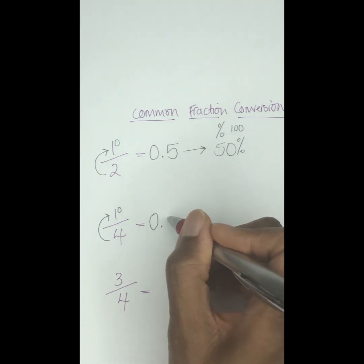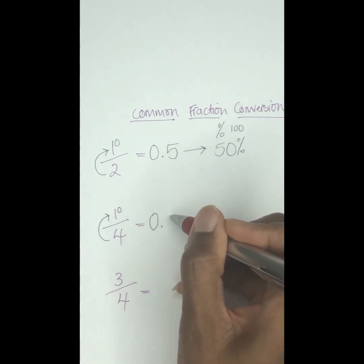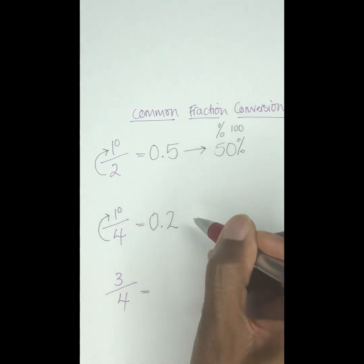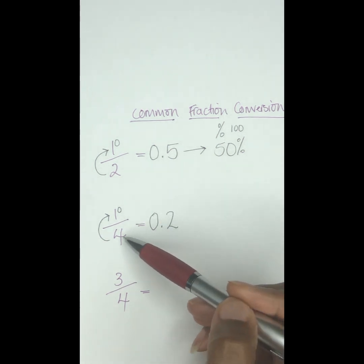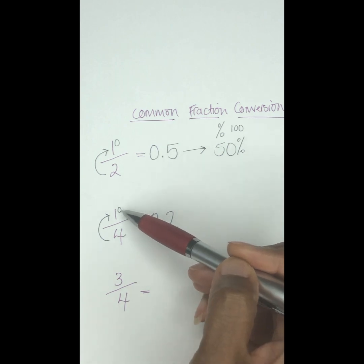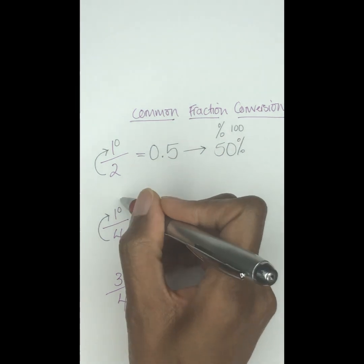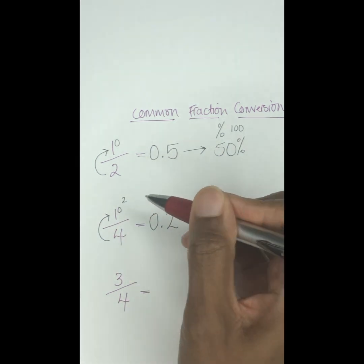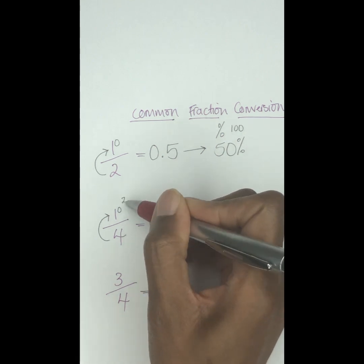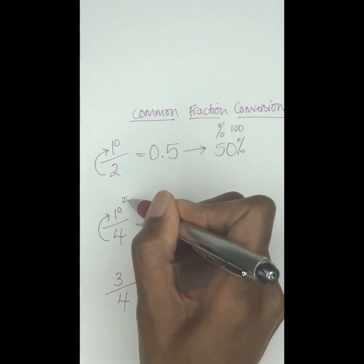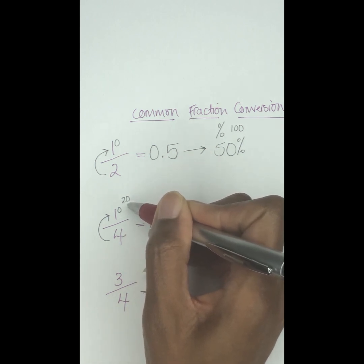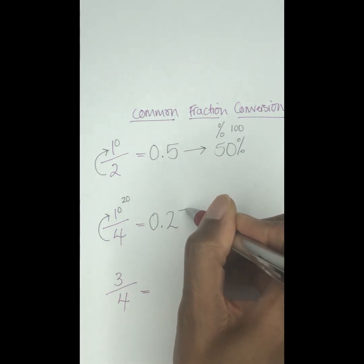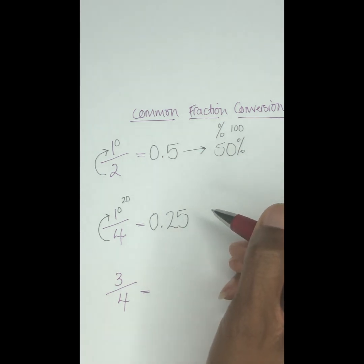So 4 into 10 goes 2 times because 4 times 2 is 8. And then what's left over? So we have to put remainder up here. Two times 4 is 8, how far is 8 away from 10? It's 2 away. So we're going to put a 2 here. Then 4 goes into 2, it can't go, so we're going to put zero at the end of that. So then 4 into 20 goes 5 times because 5 times 4 is 20. So it's always good to know your multiplication tables for this as well.